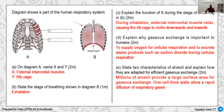Explaining the function of the external intercostal muscle during inhalation: the muscle relaxes, causing the rib cage to move downwards and inwards, allowing air to be taken in. As for the importance of gas exchange: it allows you to obtain oxygen, which produces energy, and at the same time releases waste gases like carbon dioxide produced during respiration.